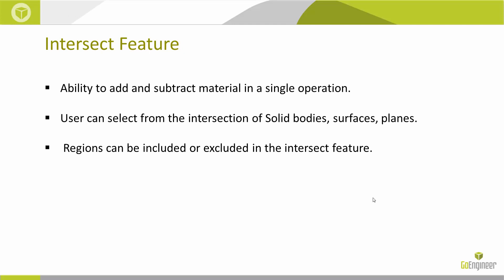The Intersect tool can both add and subtract material in a single operation, unlike the combined feature where you have to perform these tasks separately. The Intersect tool allows the user to select from solid bodies, surface bodies, and planes.